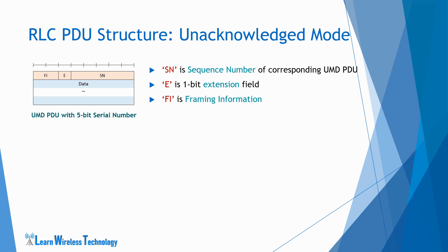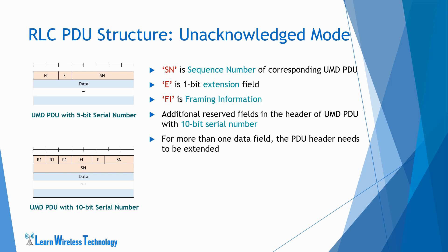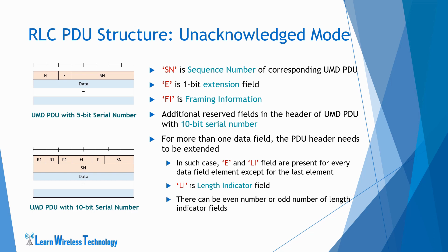An unacknowledged mode RLC entity can be configured to use either a 5-bit sequence number or a 10-bit sequence number. The UMD PDU with 10-bit sequence number consists of some additional reserved fields in the header represented by R1. When there are more than one data field present in the PDU, the PDU header needs to be extended. In such case, the E field and LI field are present for every data field element except for the last element. LI is the length indicator field which indicates the length in bytes of the corresponding data field element. There can be even or odd number of length indicator fields. In case of odd number, padding bits are added after the last LI field; for even number, no padding bits follow.